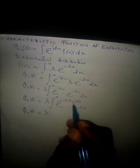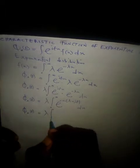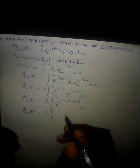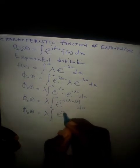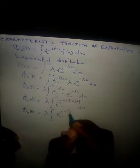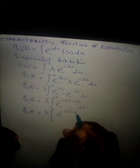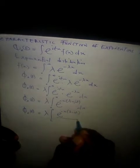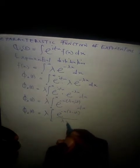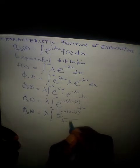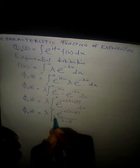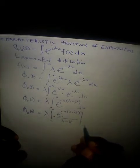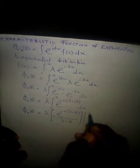Integrating this expression, we obtain phi of x of t equals lambda times exponential raised to the power minus x times the quantity lambda minus i theta t, divided by the quantity lambda minus i theta t, evaluated from zero to positive infinity.